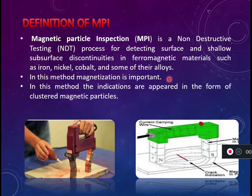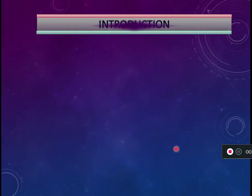In this method, magnetization is important, so only ferromagnetic materials can be checked using the magnetic particle test. The indications appear in the form of a cluster of magnetic particles. Looking at the figure, you can observe a cluster of magnetic particles due to a discontinuity present in that region.